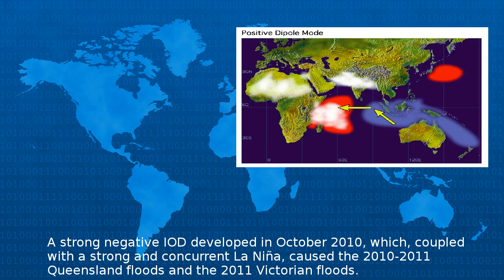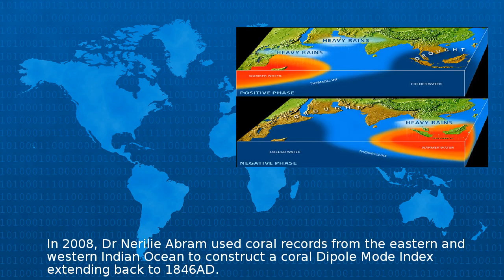A strong negative IOD developed in October 2010, which, coupled with a strong and concurrent La Niña, caused the 2010–2011 Queensland floods and the 2011 Victorian floods.